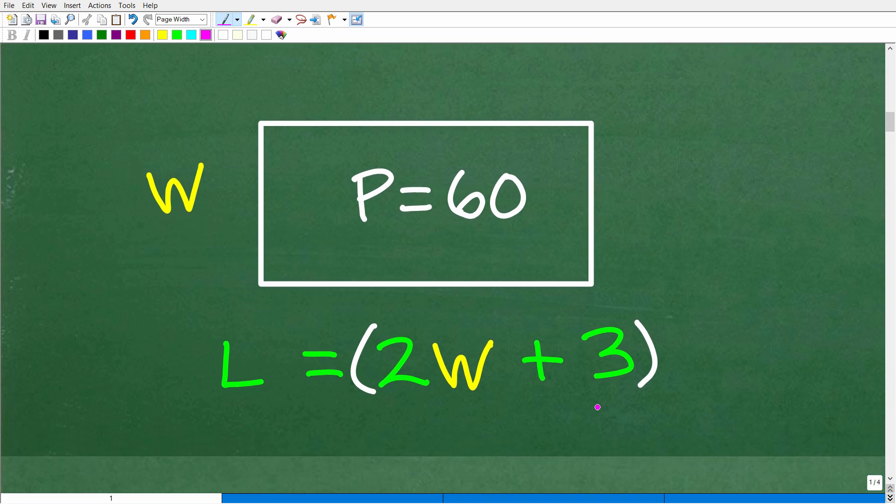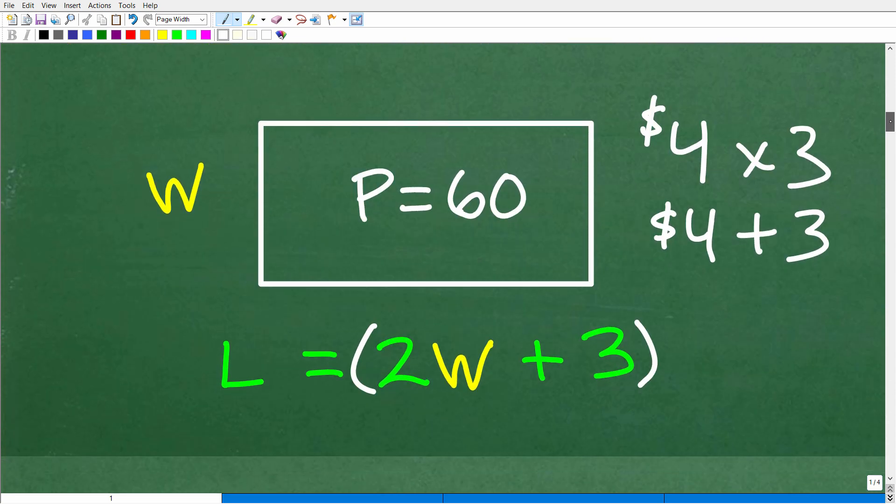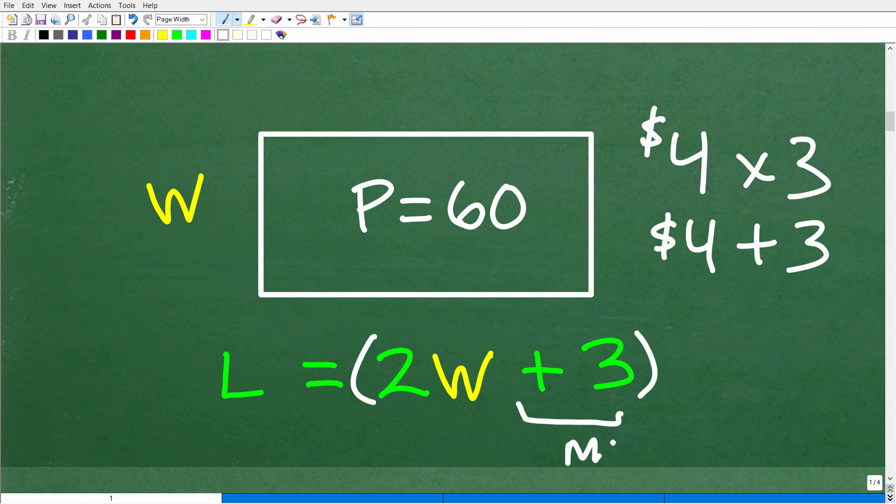Let's translate this sentence into a variable or algebraic expression. So the length is three more. Let's say you have $4 and I give you three more dollars. How do we interpret that mathematically? You have $4 and I give you three more dollars. So does that mean you have this many dollars? Do we multiply? No. If you have $4 and you have three more dollars, we add three. So this part of the problem right here, three more, means that we have to add three, not multiply three. But multiply or add three to what? Well, this is three more than twice the width. Here is the width. Twice the width would be two W. So the length is three more. Three more than twice the width.